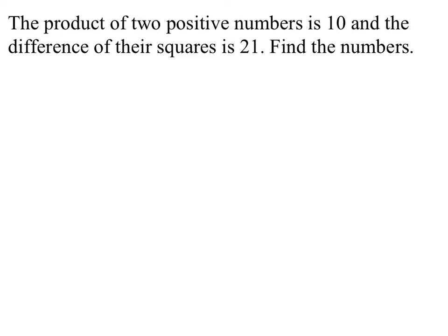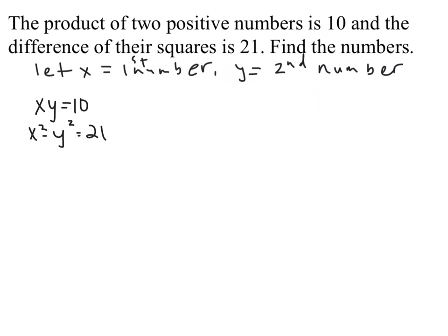Word problems can come up on systems of nonlinear equations just like they do for linear systems. Here it says: the product of two positive numbers is 10, and the difference of their squares is 21; find the two numbers. Always start with a let statement to define your variables. Let x be the first number and y be the second number. Go ahead and pause the video and write the two equations from the given information.